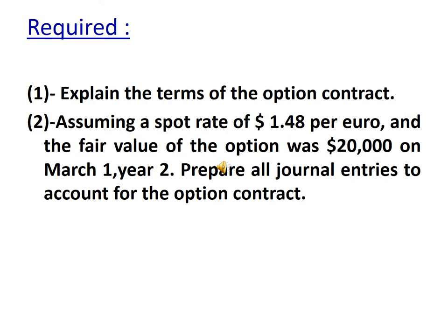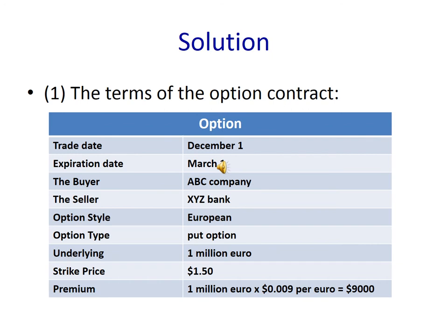Required: Explain the terms of the option contract. Assuming a spot rate of $1.48 per euro and the fair value of the option was $20,000 on March 1st, year 2, prepare all journal entries to account for the option contract. The terms of the option contract: trade date December 1st, expiration date March 1st. The buyer is APC company and the seller is XYZ Bank. The option style is European and the option type is put option. Underlying: 1 million euro. Strike price: $1.50. Premium: 1 million euro × $0.009 per euro = $9,000.